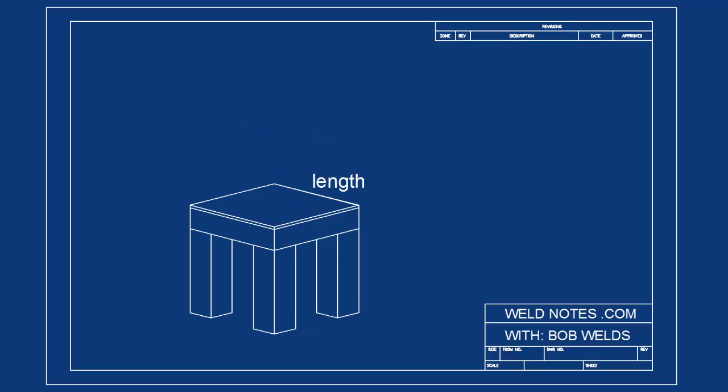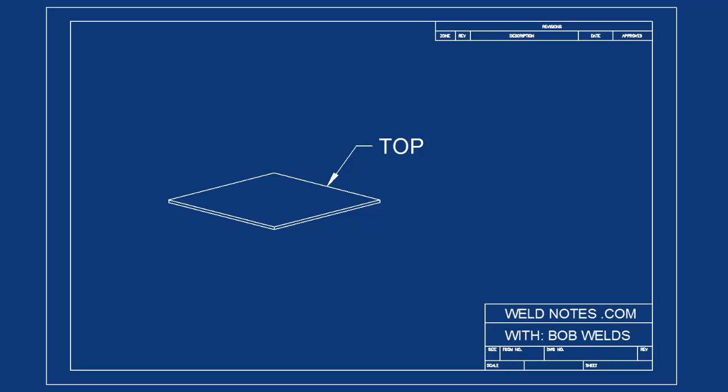The plant stands are always square, that is, the length is always equal to the width. The stands have a steel top.